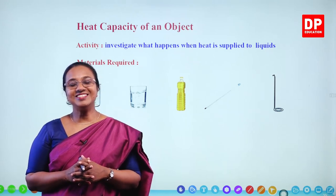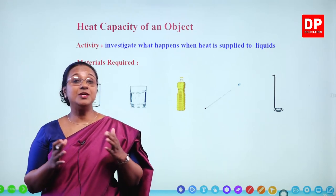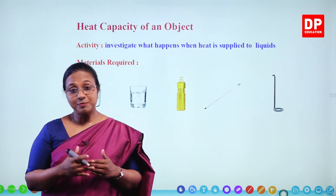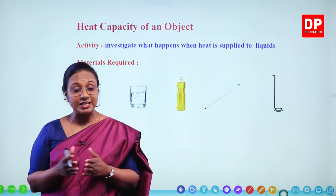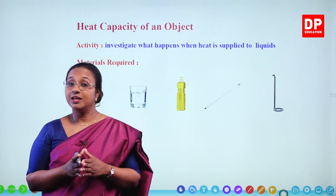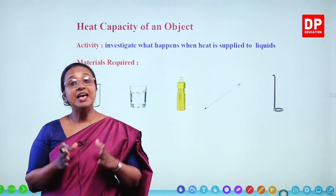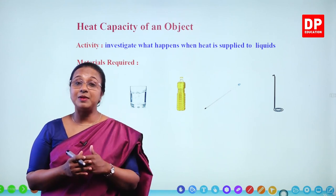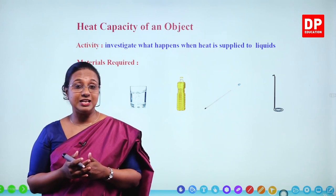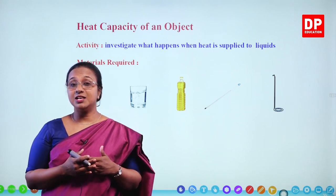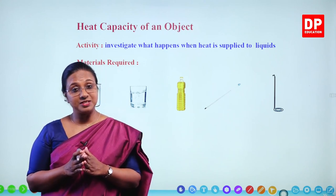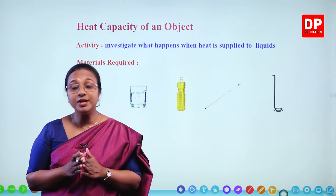Welcome to today's lesson students. In the previous chapter, we discussed what heat is. Heat is a type of energy — thermal energy or kinetic energy due to the kinetic energy of molecules. There is heat in substances and that can be measured by temperature using thermometers. Temperature is the measure of heat energy, and we understood how heat transfer occurs from one substance to another — it flows from high temperature to low temperature.